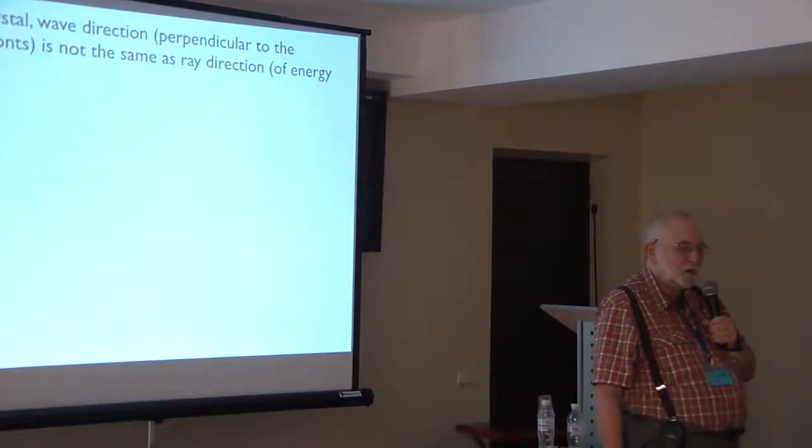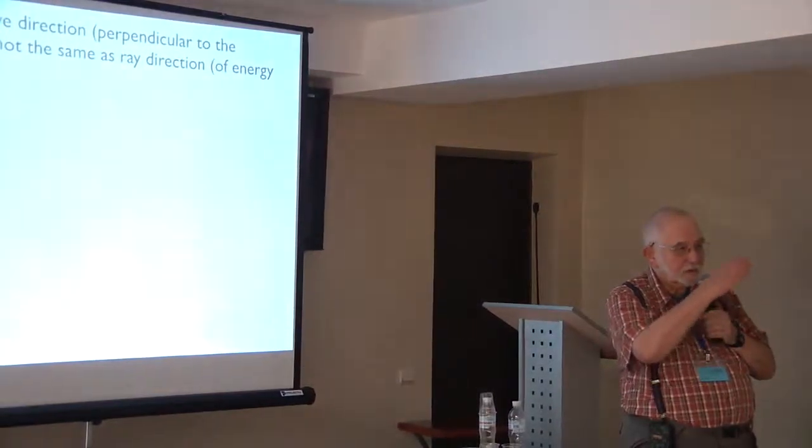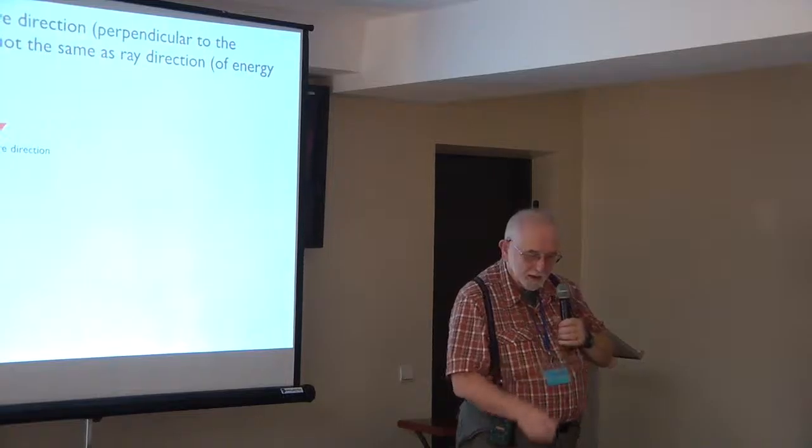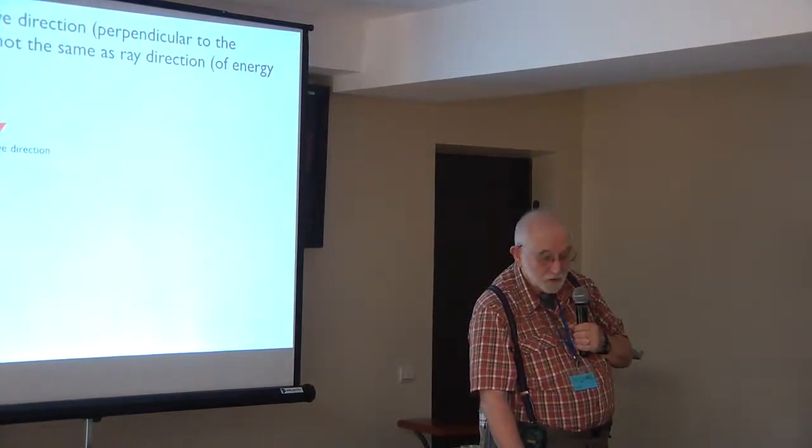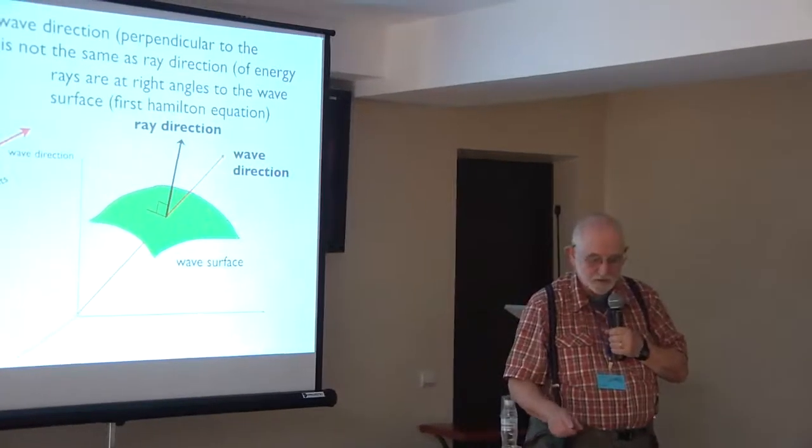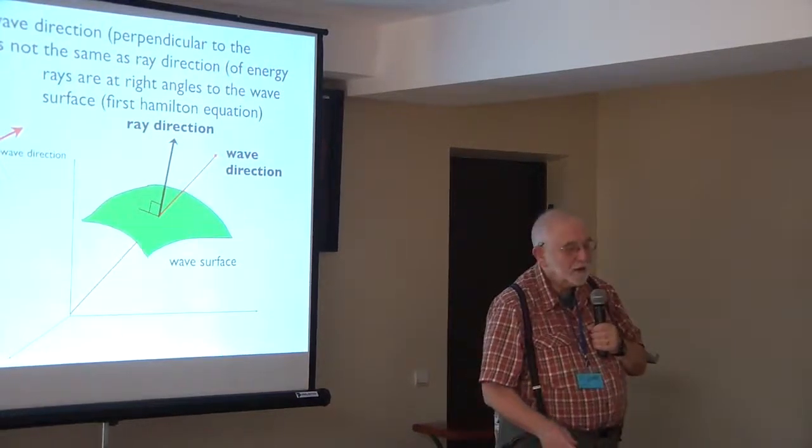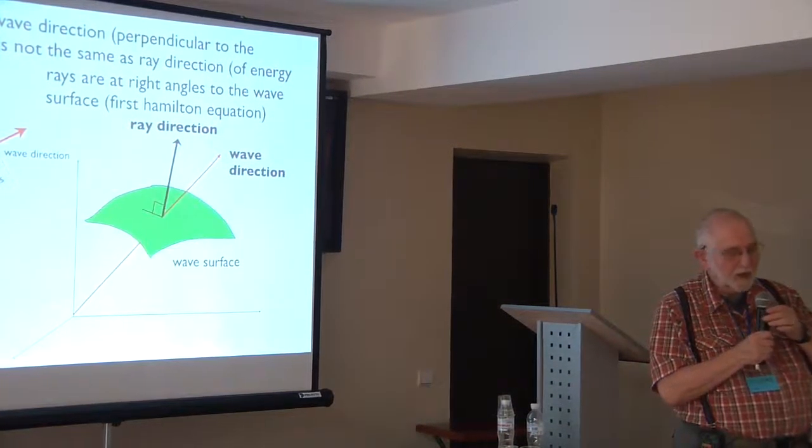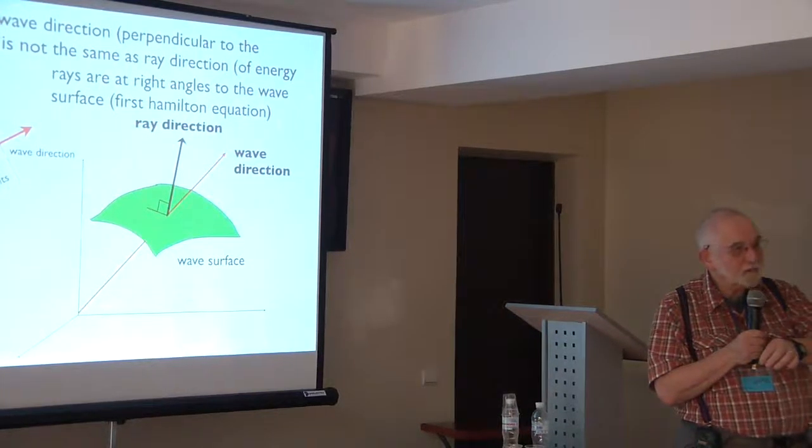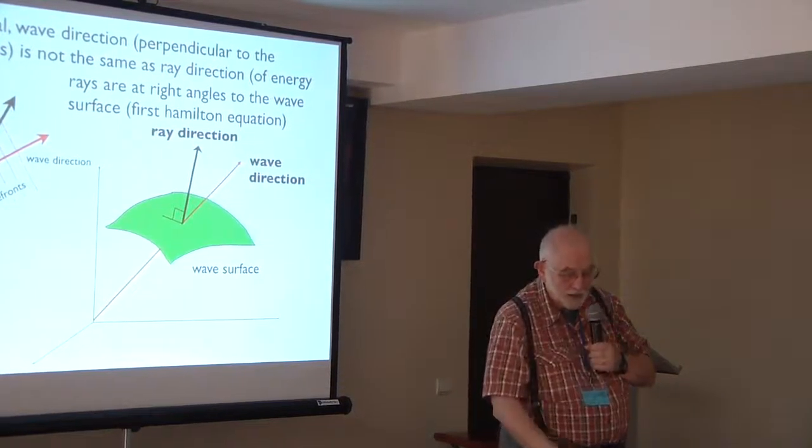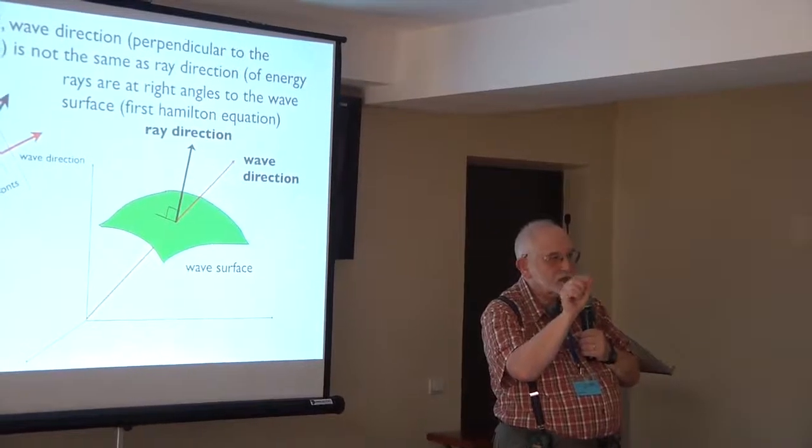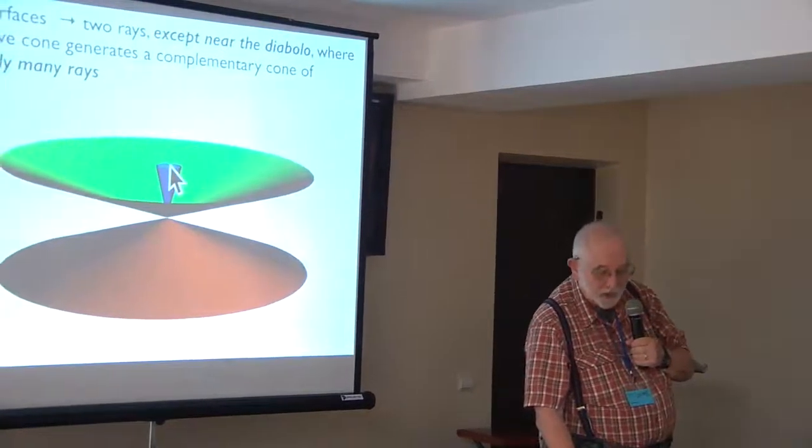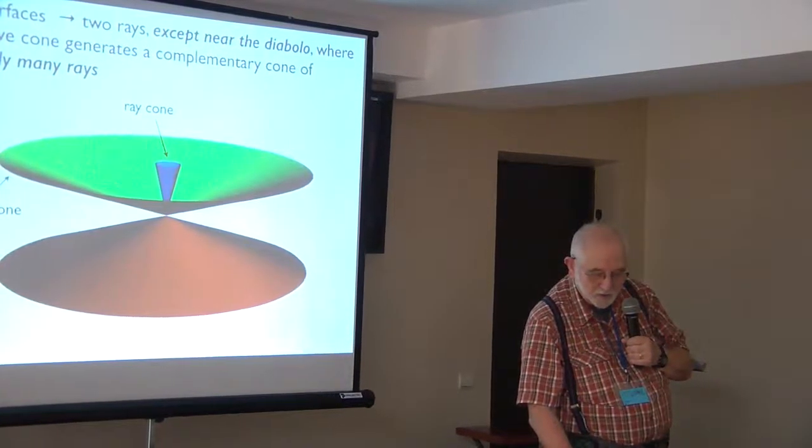He knew another thing. He knew that in a crystal, the wave direction perpendicular to the wave crests is not the same as the ray direction along which energy flows. This is what he knew. And in fact, he also knew the rule that the rays are at right angles to the wave surface. So here's the wave direction, here's the ray direction. Now because there are two surfaces, for most directions you have two waves and you have two rays. That's why this whole subject is called birefringence optics. Except near this direction where the two surfaces intersect with a diabolical direction. And then the cone of waves generates a complementary cone of right angles, infinitely many rays. Wave cone, ray cone, right angles.